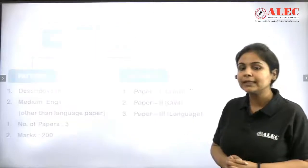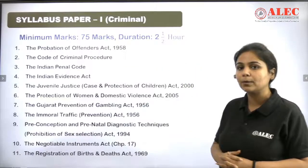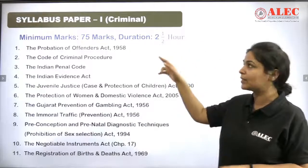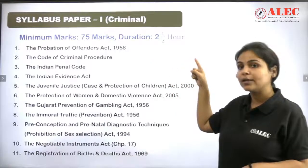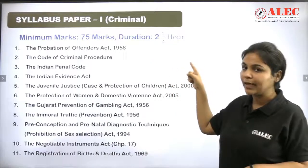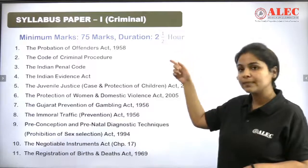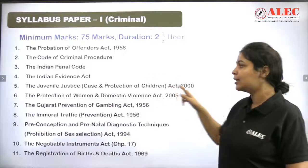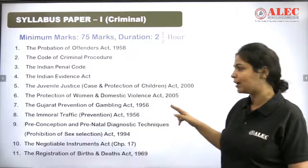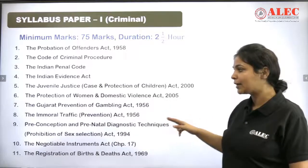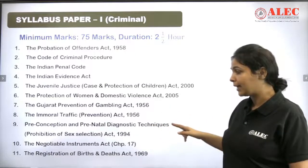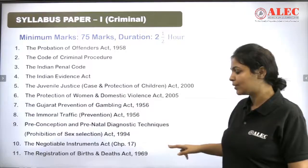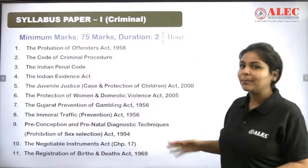Now let's discuss the syllabus in detail. Paper 1 is criminal law, and it is a little bigger. This paper is 75 marks. The syllabus includes: Probation of Offenders Act, Criminal Procedure Code, Indian Penal Code, Indian Evidence Act, Juvenile Justice Act, Domestic Violence Act, Gujarat Prevention of Gambling Act, Immoral Traffic Act, Preconception and Prenatal Diagnostics Act, Negotiable Instrument Act Chapter 17, and the Registration of Births and Deaths Act. It is a little longer, but you will learn it.